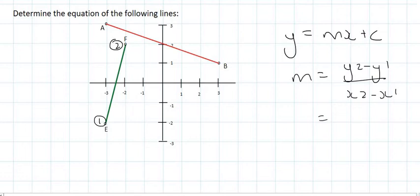The formula says that I should find the y-value of point number two, which is 2, minus the y-value of point number one, which is -2. The x-value of point number two is -2, and the x-value of point number one is -3.